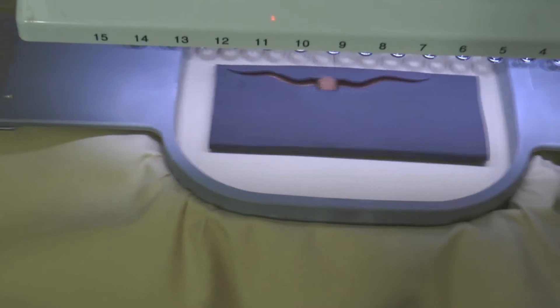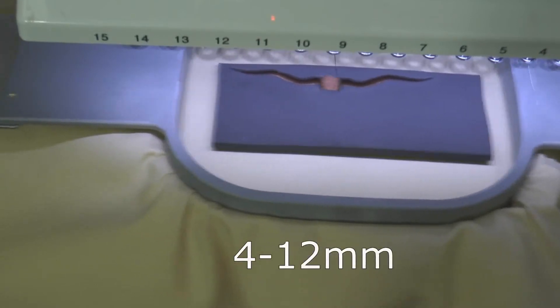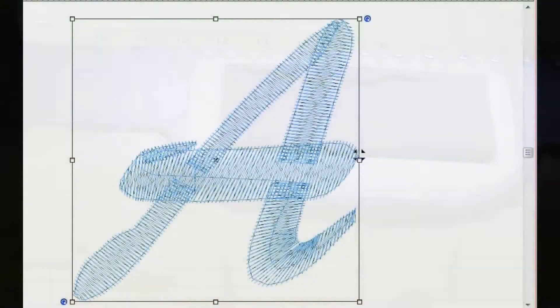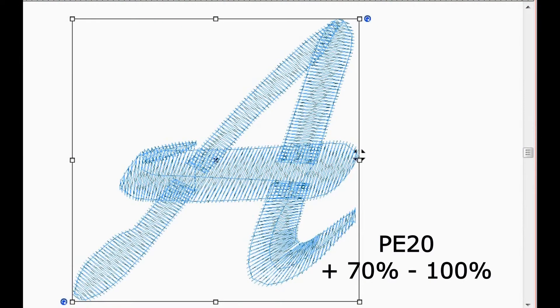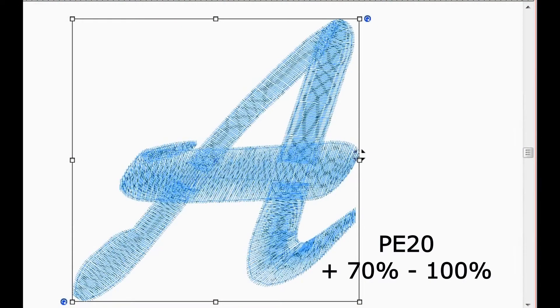Satin stitches should be between 4 and 12 mm wide and stitch density is heavier than for standard embroidery. For type PE20, use 70 to 100% more stitches than for standard embroidery to cleanly cut the foam.